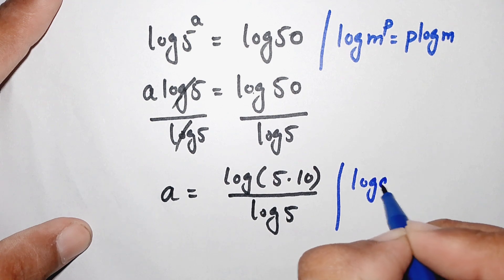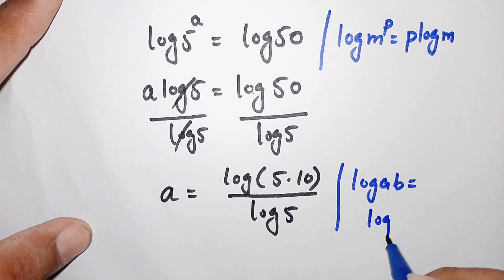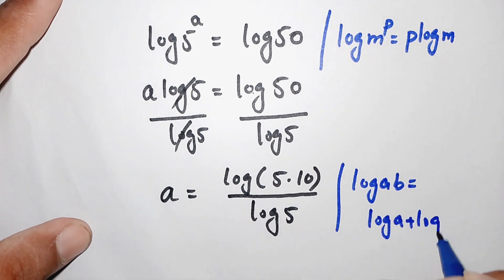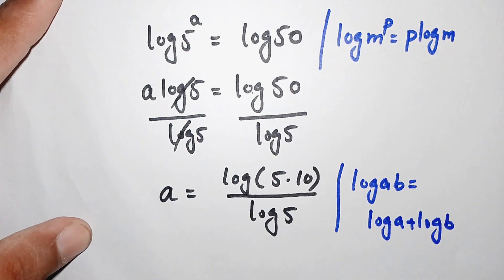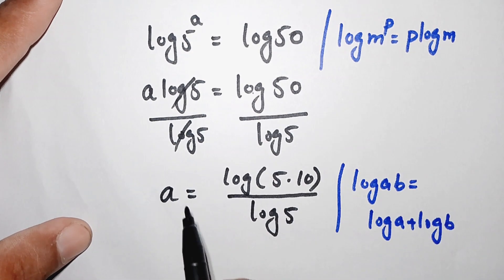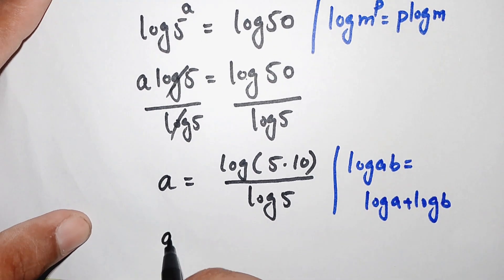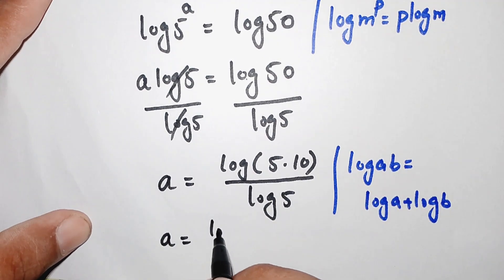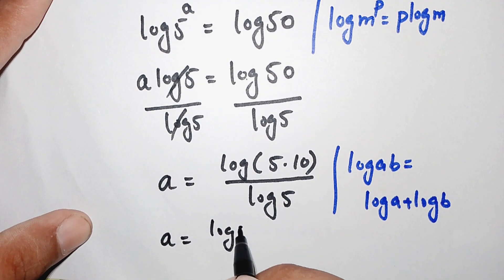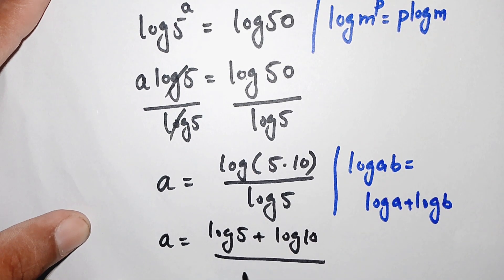We know that log of a times b is equal to log of a plus log of b. Applying this rule, log of 5 times 10 becomes log of 5 plus log of 10. So a is equal to (log of 5 plus log of 10) divided by log of 5.